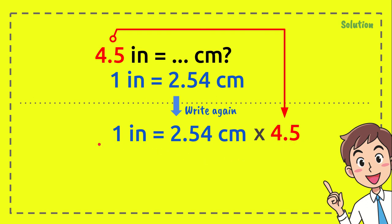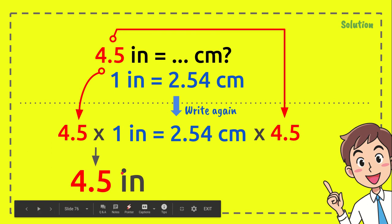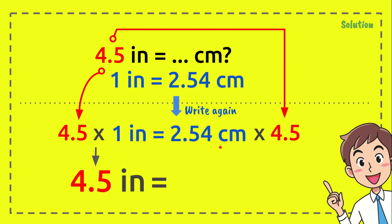Okay, now 4.5 times 1 equals 4.5 inches, and 2.54 centimeters times 4.5 equals 11.43 centimeters.